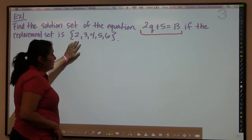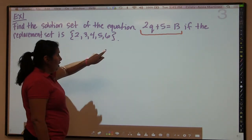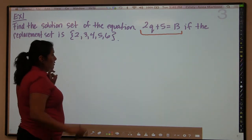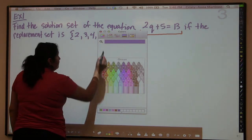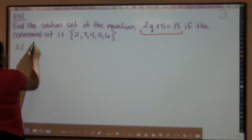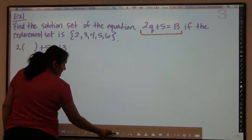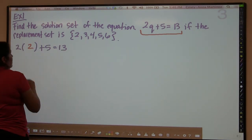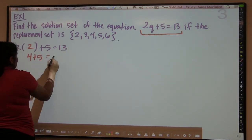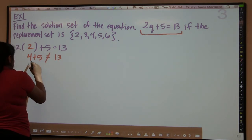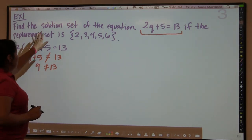What we're supposed to do is take the variable from this equation and replace the variable Q with each of these elements one at a time. We start with 2: 2 times Q plus 5 equals 13. Using 2, we get 2 times 2 which is 4, and 4 plus 5 is 9. Since 9 does not equal 13, the number 2 would not be in the solution set.